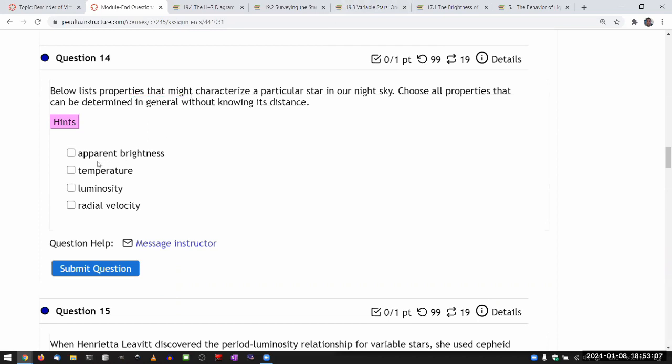So apparent brightness, well, that's how it appears. You don't really need anything else, just a good light sensor. That's all you need.